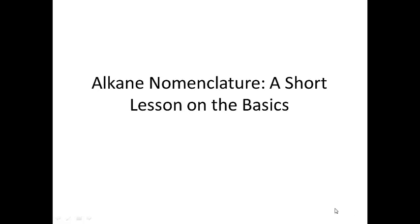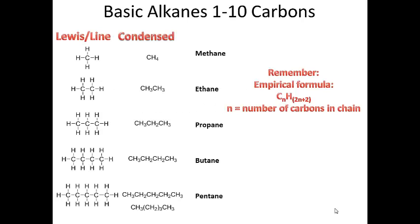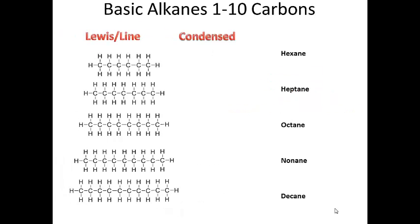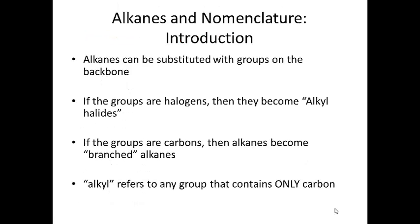Let's run through a nomenclature exercise real quick. We've been doing this off and on throughout the semester, so I just want to wrap up with this simple way to do nomenclature. You've seen the basic alkanes, 1 through 10 carbons. You've also seen the Lewis and line structures up from hexane, heptane, octane, nonane, and decane. Let's look at nomenclature and consider this as an introduction.